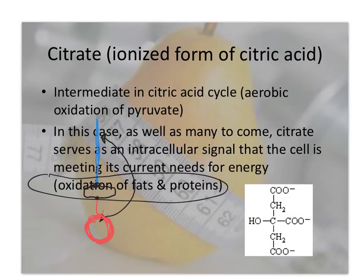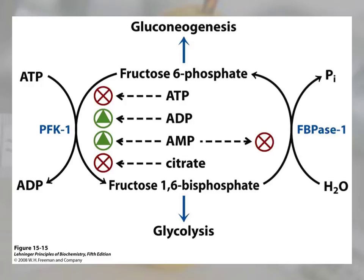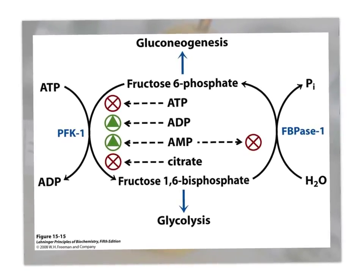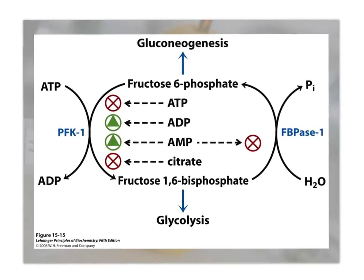Just like in the previous example with hexokinase 1 — when glucose-6-phosphate builds up it means you have plenty — the citrate signal is the same concept. There's a little cartoon showing this same feedback idea, which you can look through on your own.